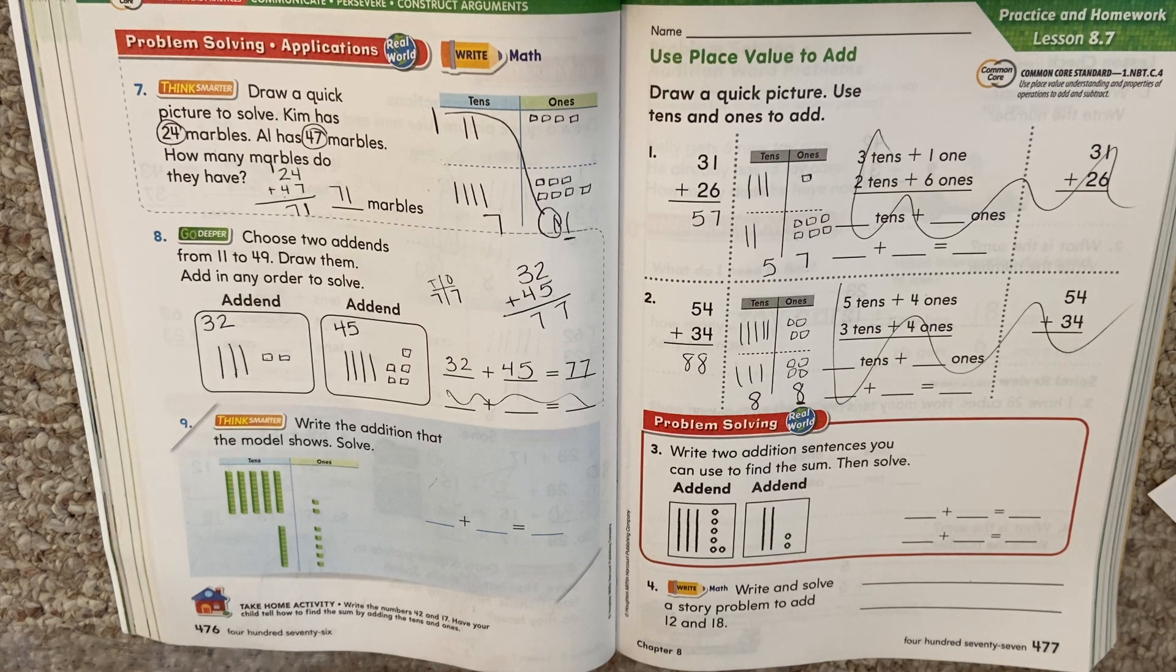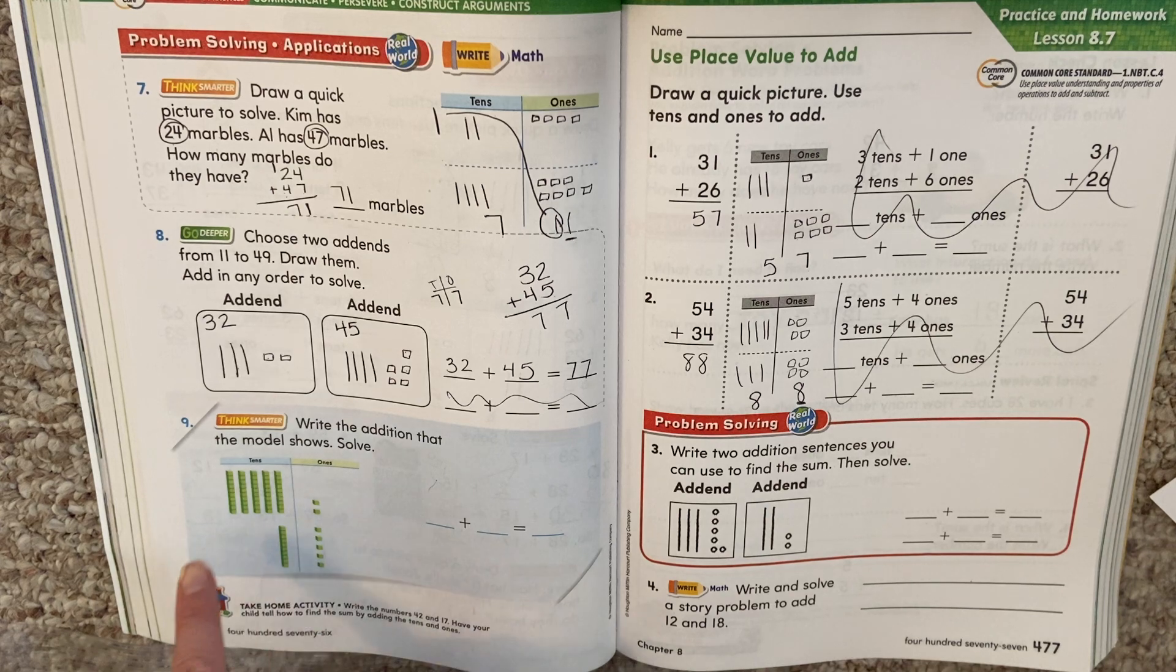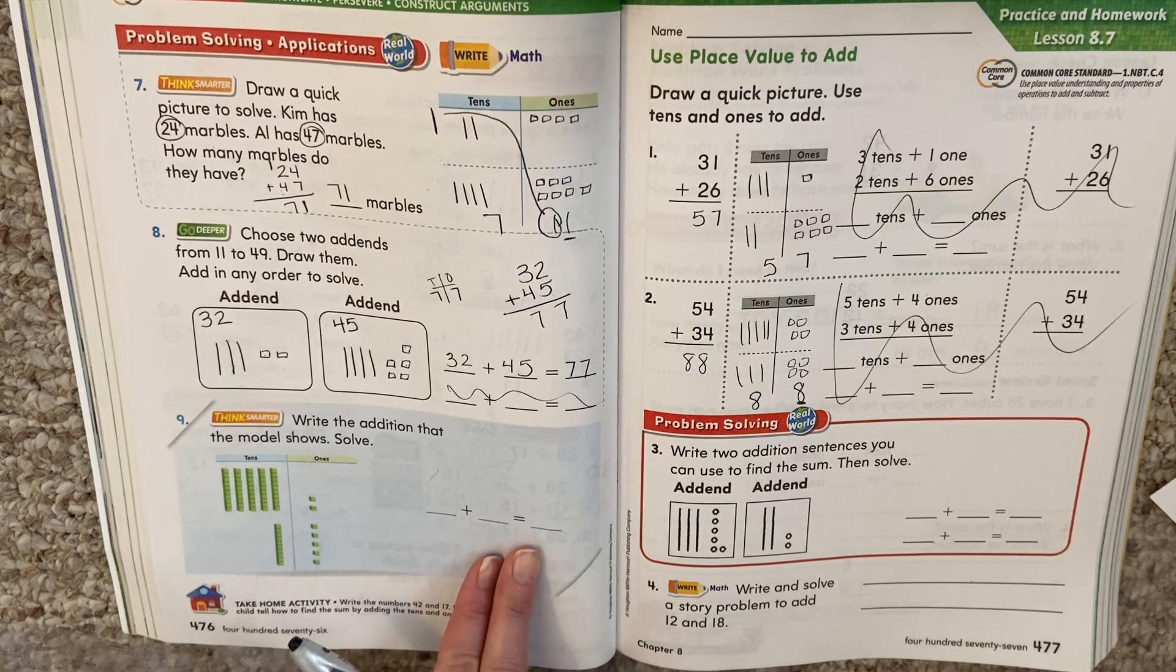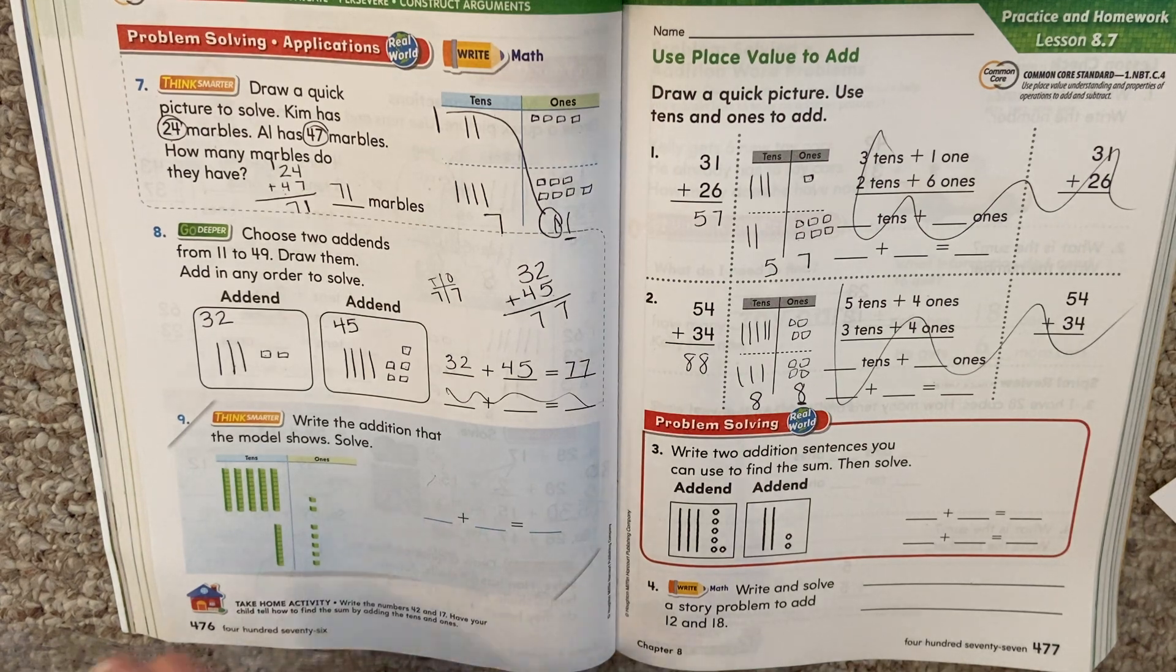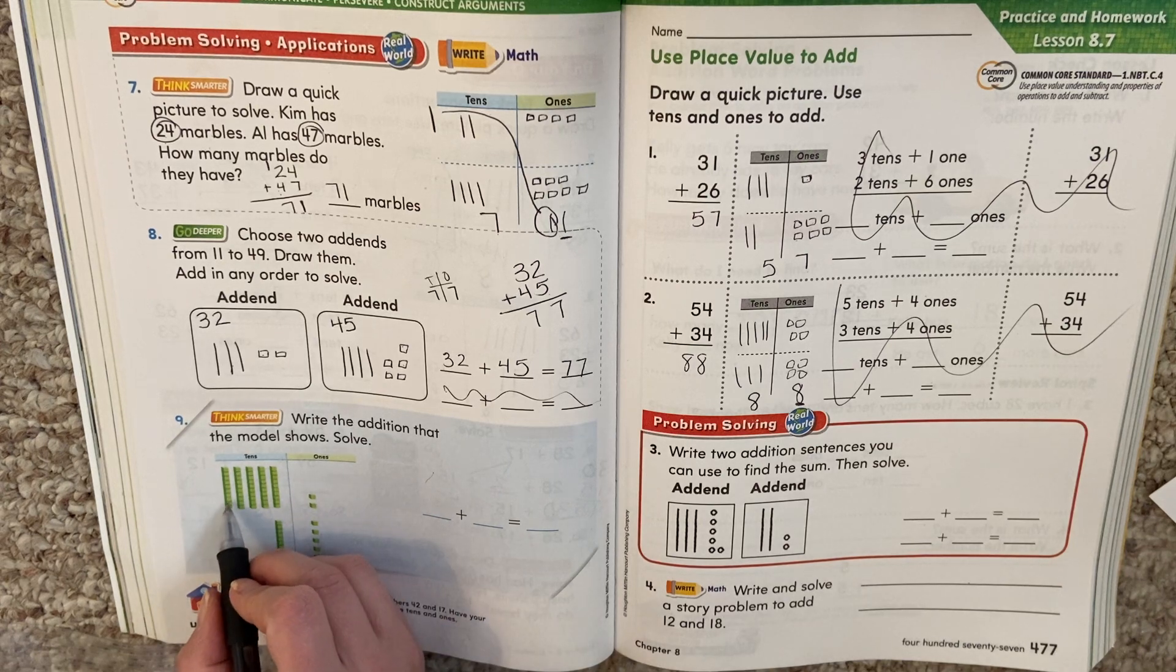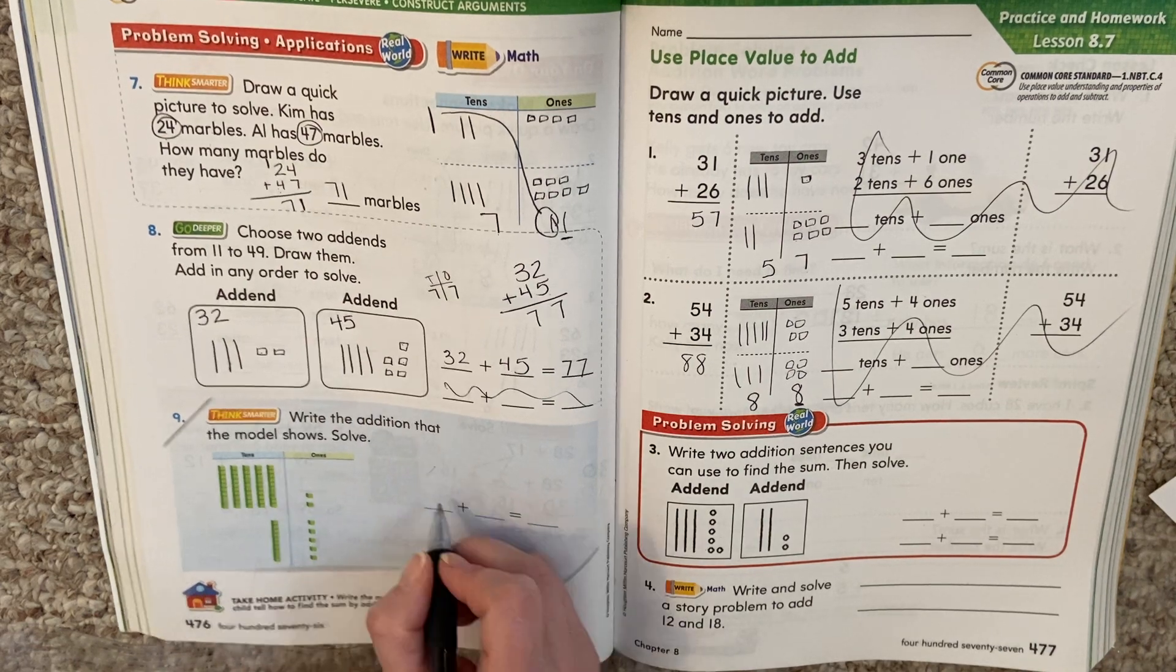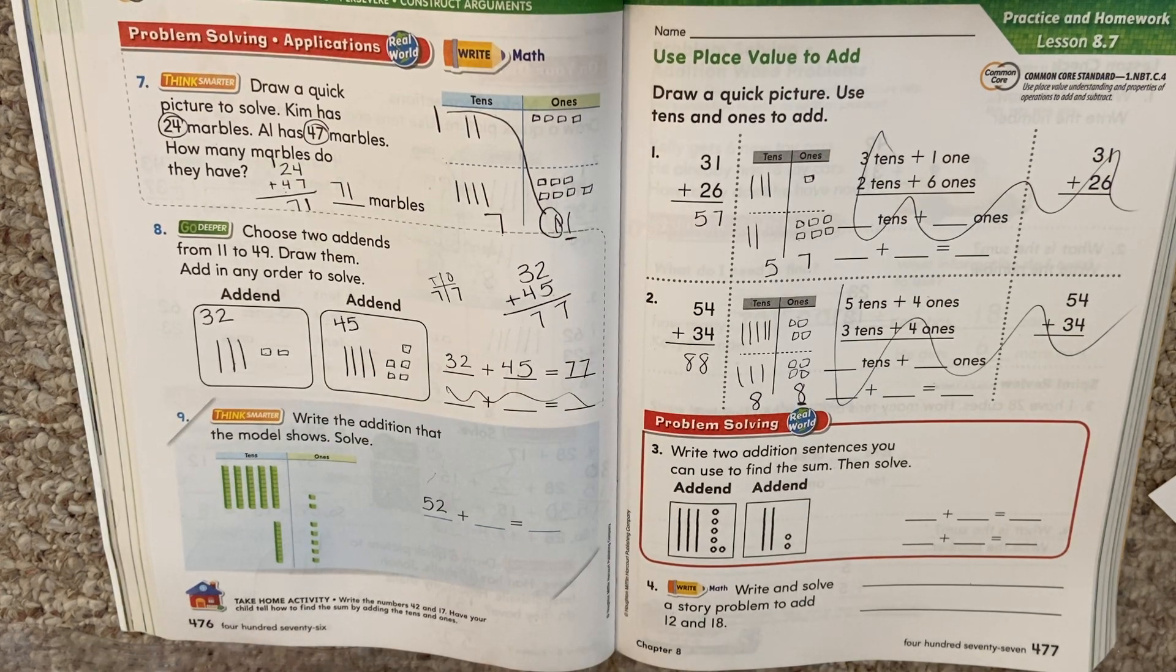Write the addition that the model shows. So really it's the addition sentence that the model shows. So let's look at this one. So it's missing the addition sentence. That means it's missing the plus problem. So think about what we've been doing each time. We look at the top part for one number. And the bottom part for the next number. So look at that top part. How many tens are in the top part? One, two, three, four, five. Five tens and two ones. So five tens, two ones. What number is that? 52.